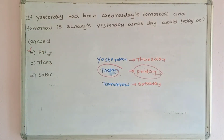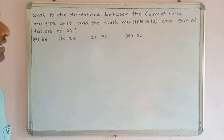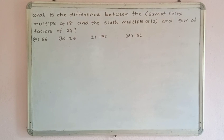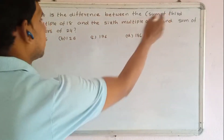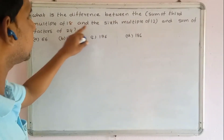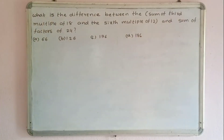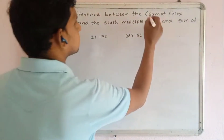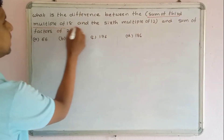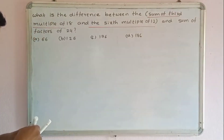What is the difference between the sum of the third multiple of 18 and the sixth multiple of 12, and the sum of factors of 12? First, find the sum of the third multiple of 18 and the sixth multiple of 12.